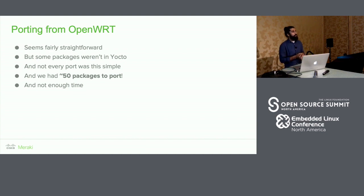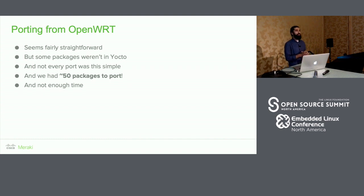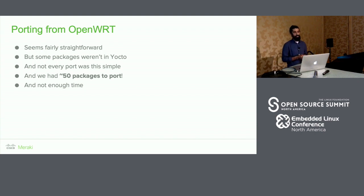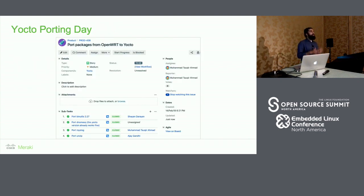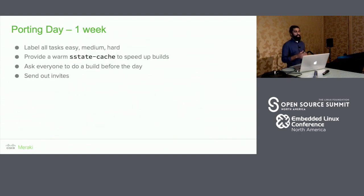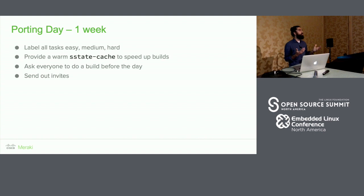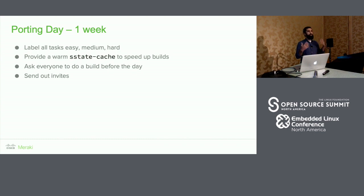Some packages were actually missing entirely. We had about 50 packages to port and just didn't have enough time, since we were working on bringing up a new product with a launch deadline. So we decided to recruit help. We organized a Yocto porting day, created a spreadsheet with all the recipes that needed porting, labeled them easy, medium, or hard, asked everyone to do a build the day before to speed things up, and sent invites with the promise of snacks and boba — that always works.